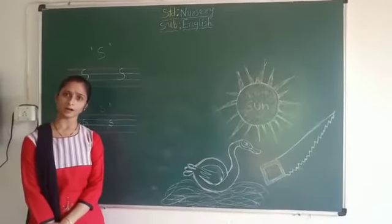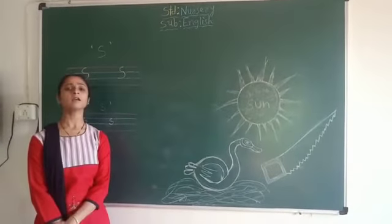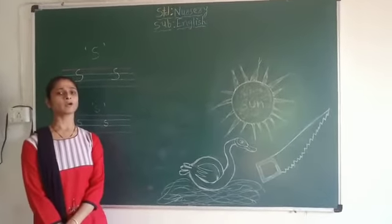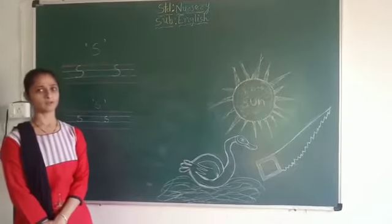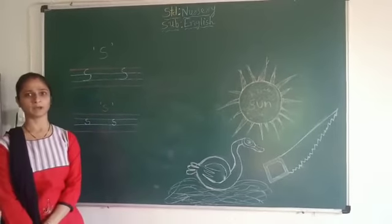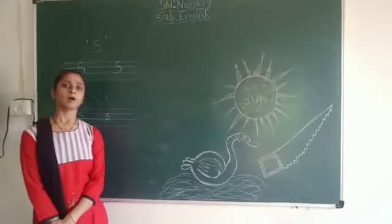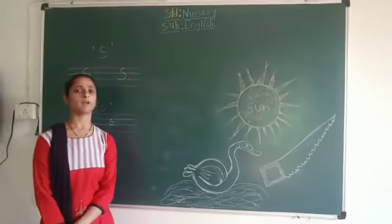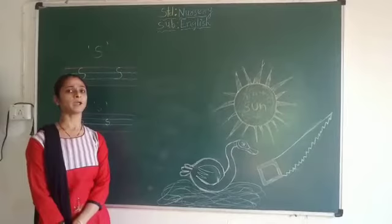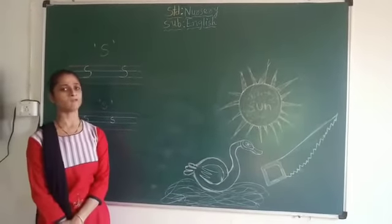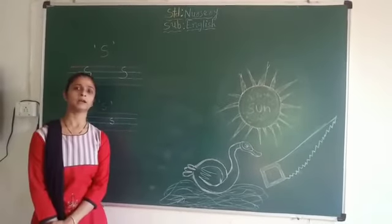So children, you can understand. Complete term 1 book — mama S for sun, baby S for sun — and complete the alphabet writing book, page number 48 and 49.